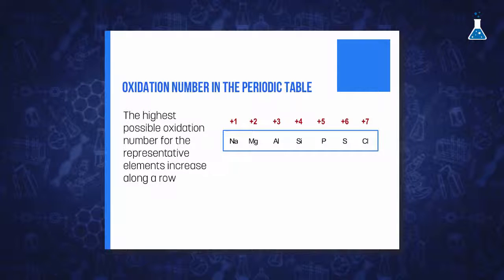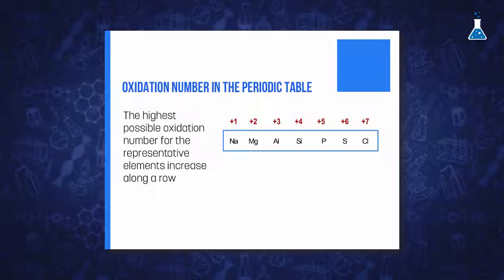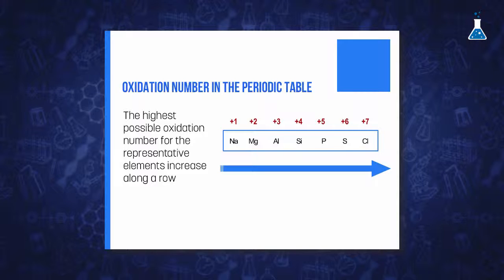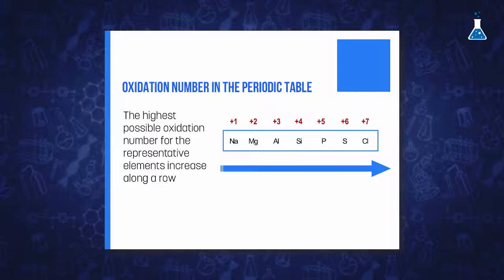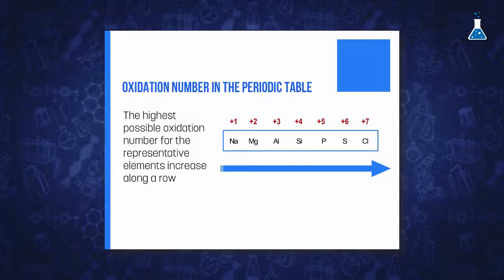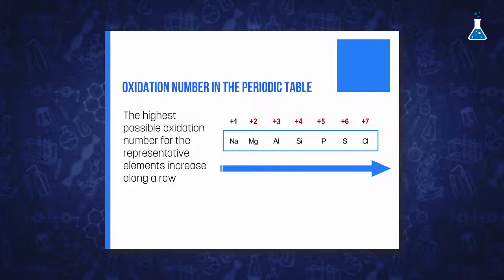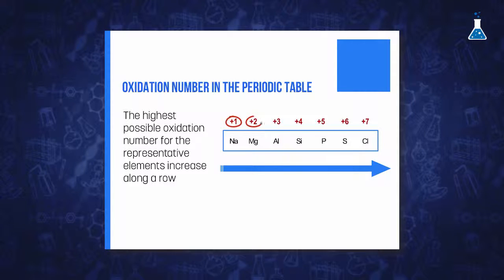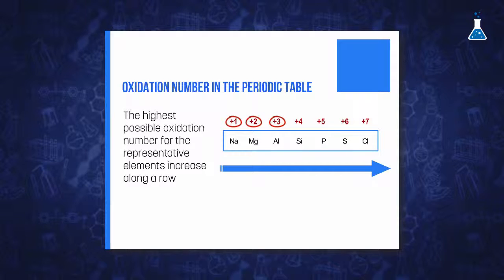The highest possible oxidation number for representative elements of the periodic table increases along a row from left to right. This maximum number corresponds to the number of electrons in the valence shell. So, while sodium has a maximum oxidation number of 1+, magnesium is 2+, aluminum is 3+, and so on, up to chlorine with the highest oxidation number of 7+.